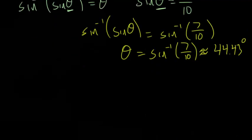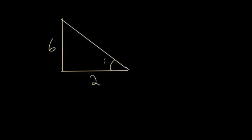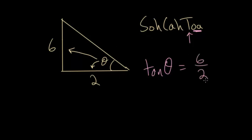Let's do one final example. We'll start with another right triangle. This time we don't know the hypotenuse, but we know one side is 2 and another side is 6. We want to find angle theta. Writing out SOHCAHTOA, relative to this angle we have the opposite side and the adjacent side. The opposite and adjacent are paired together when dealing with the tangent function. So we set up that the tangent of the angle equals the opposite, which is 6, divided by the adjacent, which is 2.